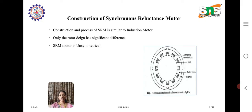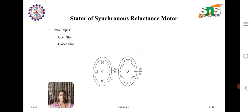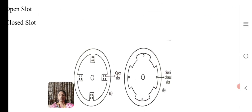Coming to construction, it is very similar to induction motor construction where it has armature conductors, slots, stator core and the outer frame. This picture shows only the construction detail of the stator. Only the rotor design has a significant difference. This reluctance motor is named with the help of the difference in the rotor; otherwise, the construction of the stator is very similar to the induction motor. Coming to stator types, we have two types: open slot and closed slot, which is semi-closed slot.